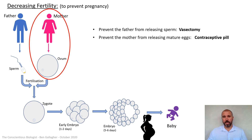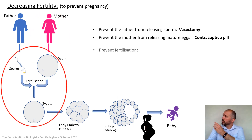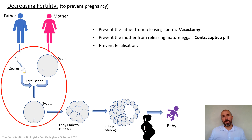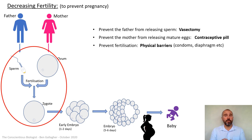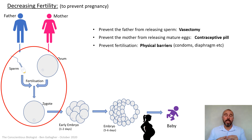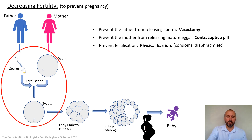Moving on to the third option: instead of trying to prevent a man producing sperm or a woman producing eggs, if we're trying to prevent fertilization, there's a far more simple method — using physical barriers to prevent the sperm from getting to the egg. Condoms are the most commonly used, or a diaphragm which fits over the cervix up inside the vagina to stop the sperm getting through. Condoms catch the sperm as they're released. Either mechanism is a physical barrier that stops the sperm from getting to the egg.